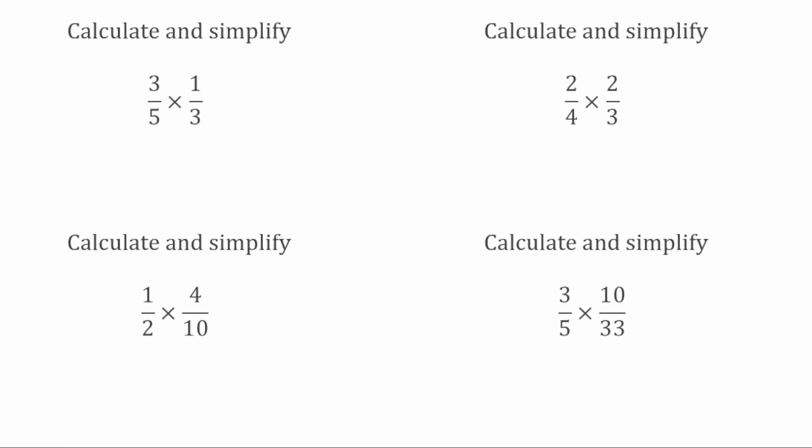For this first example I've got 3 fifths multiplied by 1 third. What we do first is look at the individual fractions and see if they're in the simplest form. 3 fifths can't be simplified any further, and 1 third also can't be simplified. Now we know the individual fractions are in simplest form, we look across the fractions — numerator to denominator — and see if we've got any highest common factors greater than 1 which we can cancel them down by.